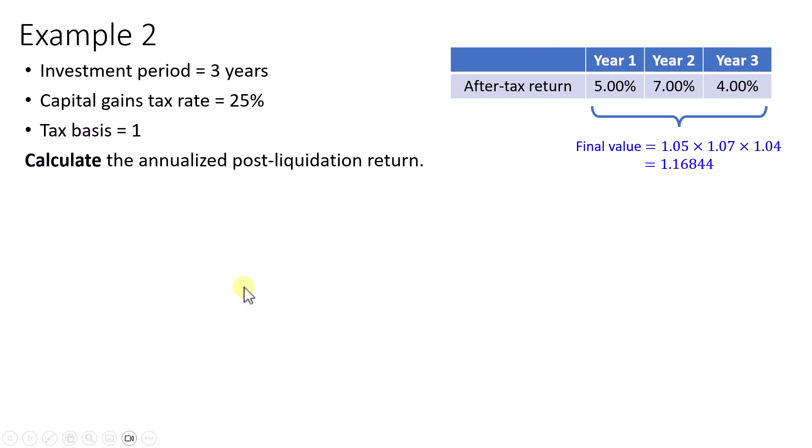Now in the case where they do not provide you the percentage of the final value that is the embedded capital gains, let's say for example they will tell you the tax basis is equal to 1.